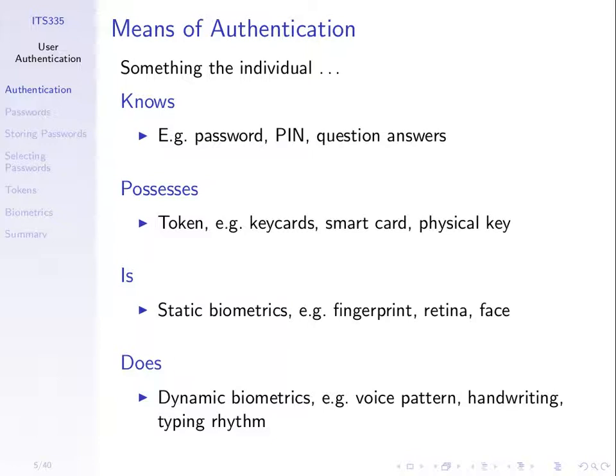So those are four different ways to authenticate humans. We all use passwords most. Smart cards are used for entry into buildings — possession of the card proves you're allowed to enter, though you can pass the card to someone else, so there are limitations. Some labs use fingerprint scanners to open doors. Dynamic biometrics like voice recognition are less common because they're hard to implement — recording voices, handling noise, and comparing voice patterns is computationally difficult.